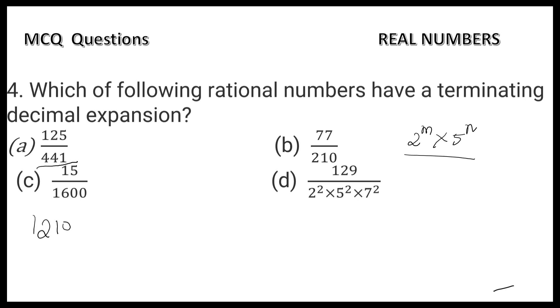Factorize 210: dividing by 2, then 5, then 3, then 7. So 210 = 2 × 5 × 3 × 7. Since the denominator has factors other than 2 and 5, this is not a terminating decimal expansion.